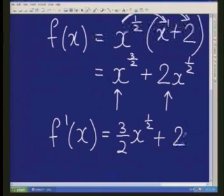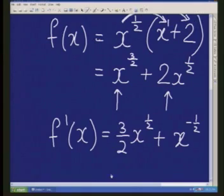Plus 2 times a half. And then we don't actually need to write this, we can do it in our heads. So 2 times a half is 1, and then x, a half minus 1 is minus a half. Right, there's our derivative function.